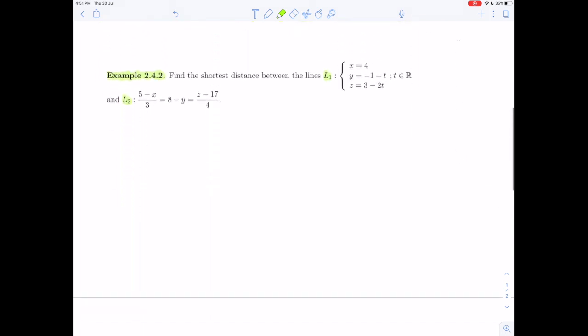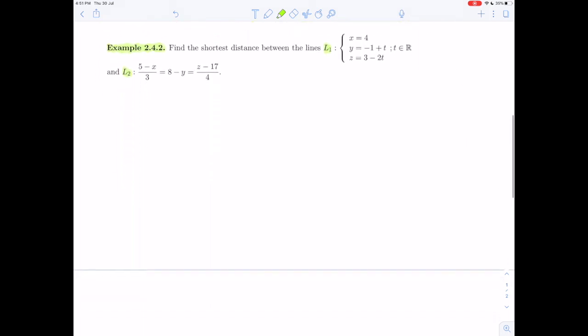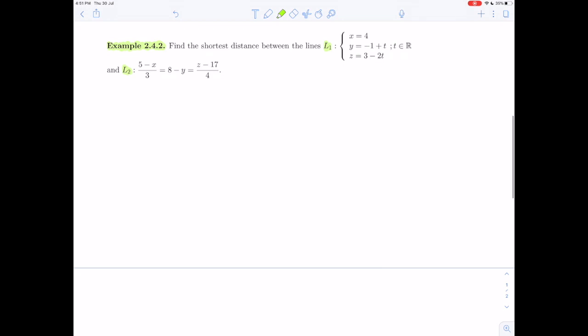So let's go back to the problem and determine the relative position of these lines. So the first thing we can see on line 1 is we can see the point that is given by the constants. So our point P1 is the point (4, -1, 3). We can also see the direction vector that was used to define L1. That's the coefficients of T, so (0, 1, -2).